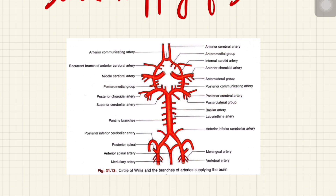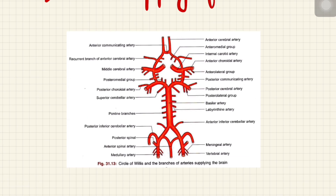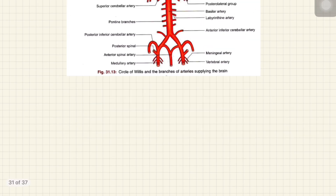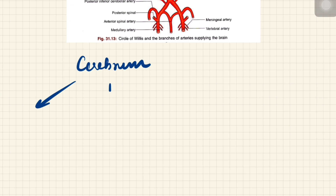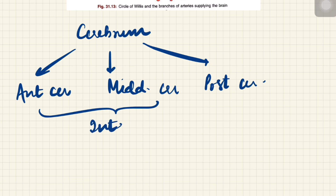This is the Circle of Willis. These arteries give off little terminal branches, which we'll talk about in detail. Each vertebral artery gives off a branch which together joins to form the anterior spinal artery, which supplies the spinal cord and a part of the medulla. Grossly speaking: the medulla is supplied by this part, the basilar artery is for the pons, then the midbrain, and then the cerebrum. For the cerebrum we have three main arteries: anterior cerebral, middle cerebral, and posterior cerebral. Anterior and middle cerebral are branches of the internal carotid artery, whereas the posterior cerebral is a branch of the basilar artery.